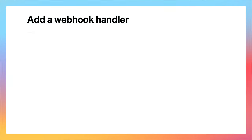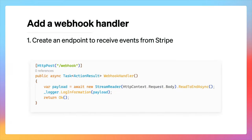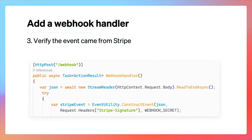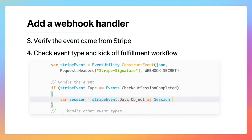Let's review what we've done so far for this basic webhook handler. We created an endpoint to receive events from Stripe and used the Stripe CLI to forward events to our local server so we could test our code. When we go live with our app, we'll set a webhook endpoint in our dashboard to our production URL for this route. In our code, we verified the event came from Stripe by calling the construct event method with the event payload, the Stripe signature header, and our webhook secret. Lastly, we checked the type of event, and if it was checkout session completed, we extracted the session object so we can use it to kick off our fulfillment workflow.